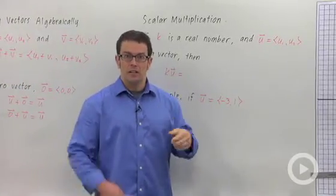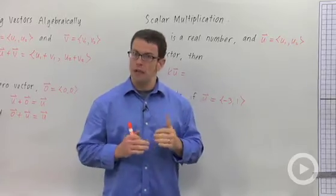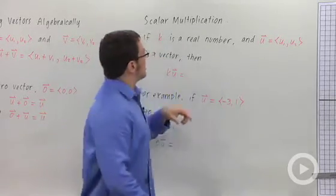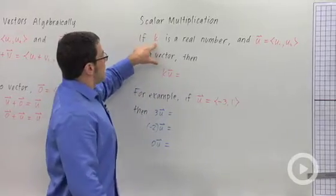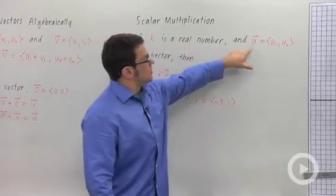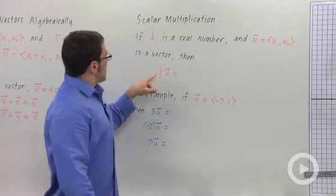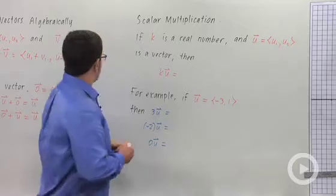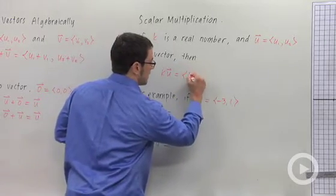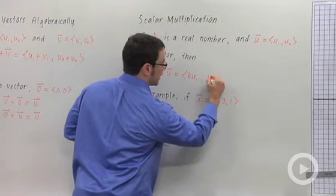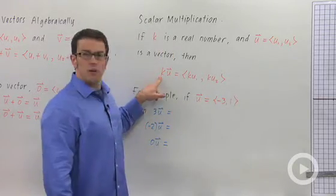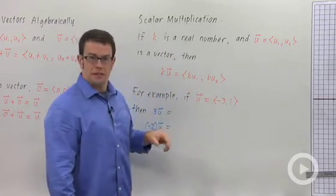Now, you remember that a scalar is a quantity that only has magnitude, not direction. So we're going to be multiplying vectors by scalars, and that's going to look like this. If k is a real number, and u is some vector, u1, u2, then the scalar multiple, k times u, is going to be defined as ku1 comma ku2. So you just multiply the scalar through each of the components, kind of like distribution.